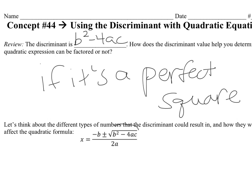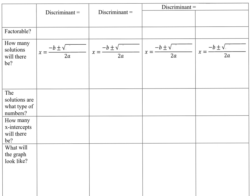The discriminant is our radicand — it's the thing under the radical. There are all these different numbers we could get. We could calculate the discriminant and usually get a positive number. Sometimes we get a perfect square, sometimes we don't. Sometimes we get zero, and zero means something. Sometimes we get a negative number. We're going to look at all the different types of discriminants and what it means when we solve a quadratic equation.